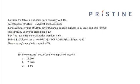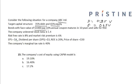Consider the following situation for Company ABC Limited. The total capital structure is 35% debt and 65% equity, so D equals 0.35V and equity equals 0.65V — 65% of the total value of the firm. Bonds with a face value of $10,000 pay a 10% annual coupon, mature in 10 years, and sell for $950. The company's unlevered stock beta is 1.4, which is equal to the asset beta.